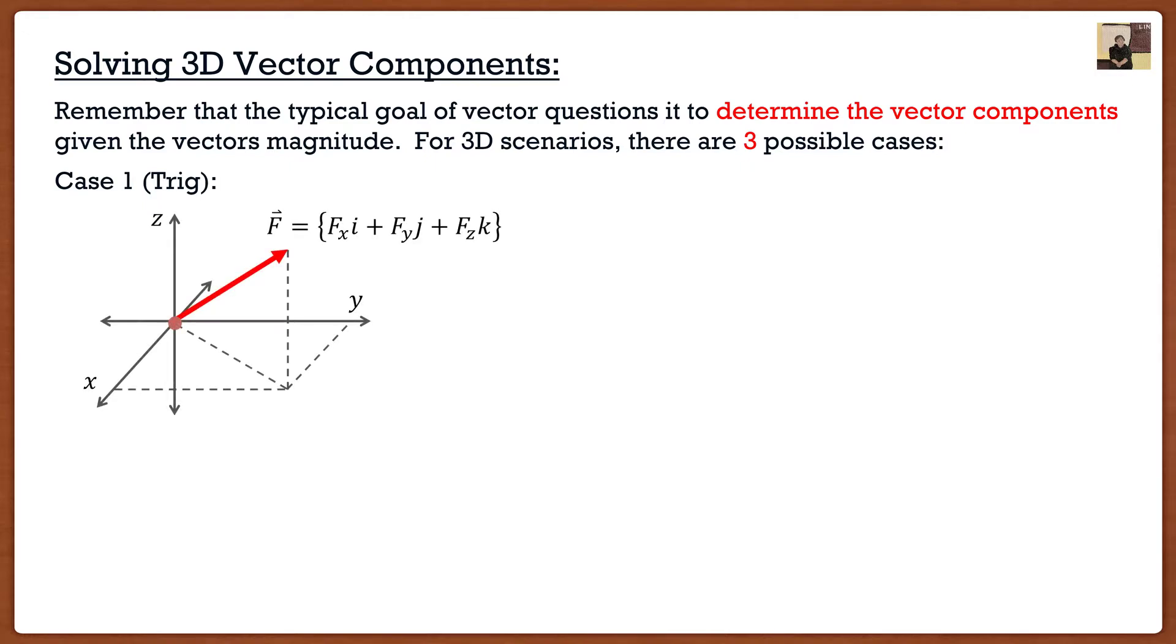This is the case where they give us our force vector in 3D and they give us two things: two trigonometric identities. They give us the angle from the xy plane up until the vector, that would be theta one in this picture, and then they give us the angle in the xy plane, that theta two. So in this particular case it looks really complex but it's actually just a matter of solving two right triangles.